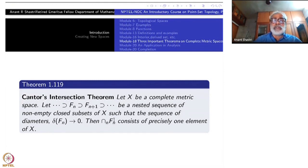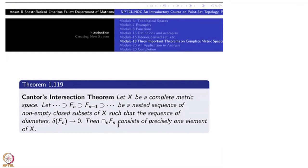So here they are decreasing. Nested could be the other way around also. So delta F_n denotes the diameter of each of them. So this sequence of real numbers converges to 0. So each F_n is closed, it contains the next one and the diameter goes to 0. Then the statement is that intersection of all these F_n consists precisely one element. This is stronger than saying that it is non-empty.